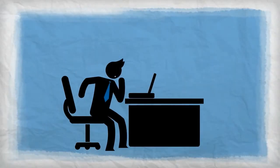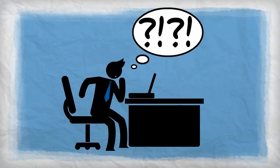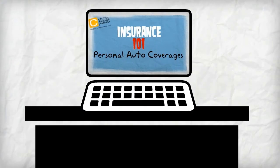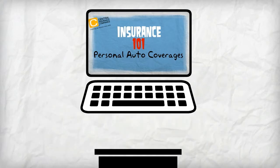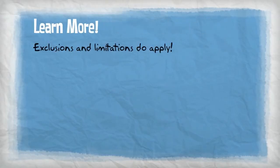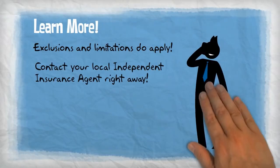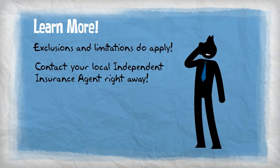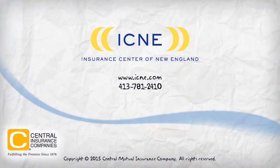As I said, the details of insurance can be confusing. This video is just a short overview of the four main parts of the standard auto insurance policy. To ask questions and learn more about the exclusions and limitations that may apply, be sure to contact your local independent insurance agent right away.